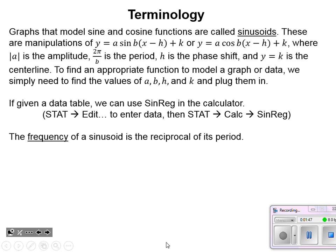We do have some new terminology, but a lot of it ties into what we've already covered. Graphs that model sine and cosine functions are called sinusoids — a graph showing that oscillating nature is called a sinusoidal graph. These are just manipulations of sine and cosine, and we have our standard equation that we used when we graphed these using our rubber stamp method, or cornerstone method.